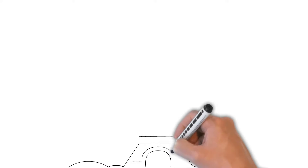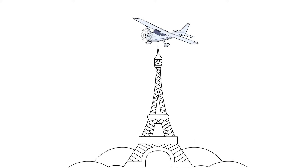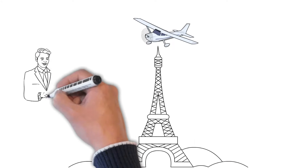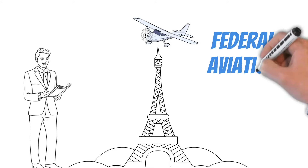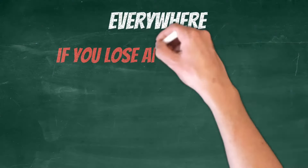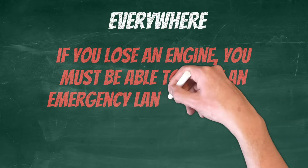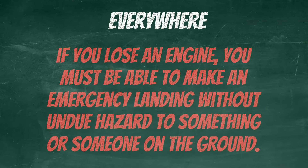Now comes the important question — just how close can I get to these towers and obstructions to flight? To figure that out, we need to pull out the Federal Aviation Regulations, specifically Part 91-119. First, everywhere on the map, if you lose an engine, you must be able to make an emergency landing without undue hazard to something or someone on the ground.